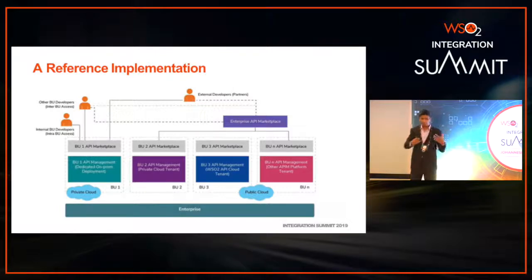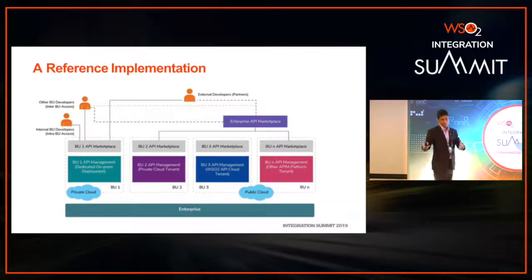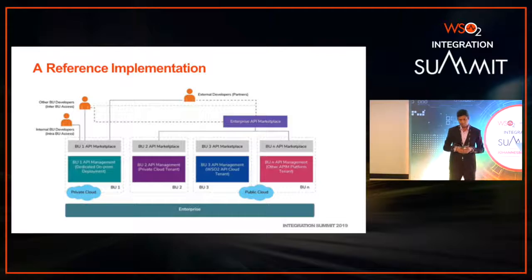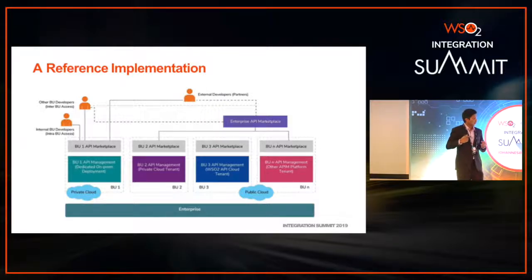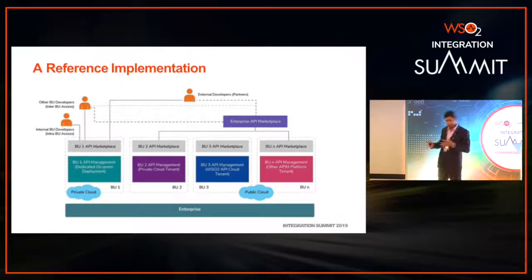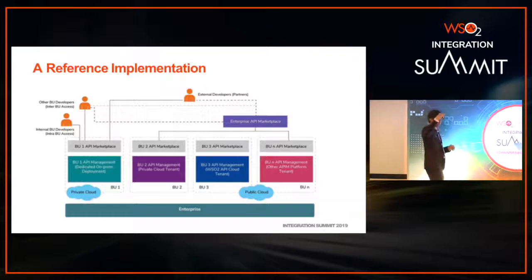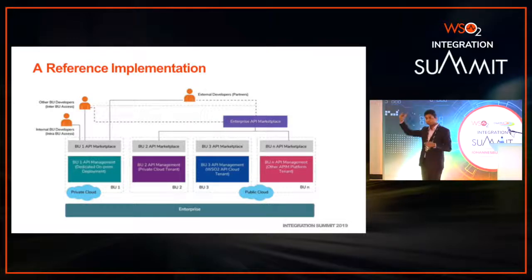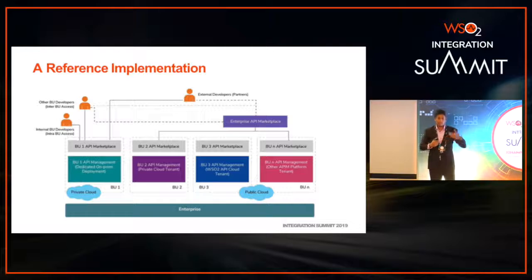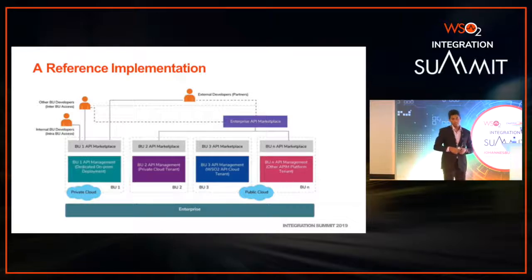Once you implement everything discussed, you will end up with something like this: an API marketplace for each business unit so that API providers and consumers within each unit can interact with each other. You can also have an enterprise-level API marketplace so that different business units can interact with each other, and if you want you can expose that to the outside as well. You need to decide up to which level you want to go, based on your business and company.